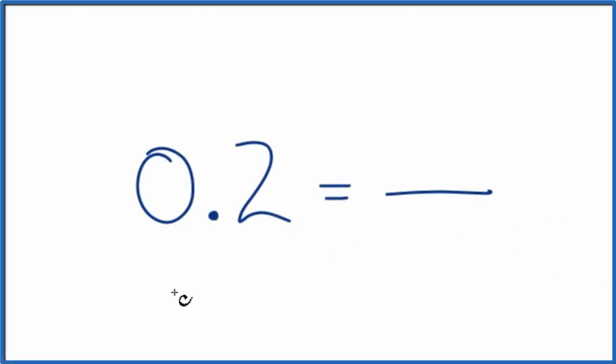If you're asked to convert the decimal 0.2 to a fraction, like numerator over denominator here, this is how you do it.